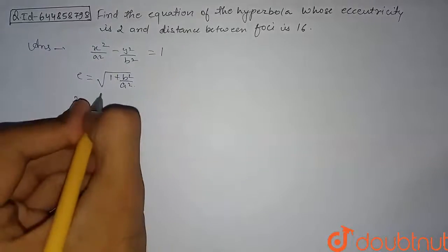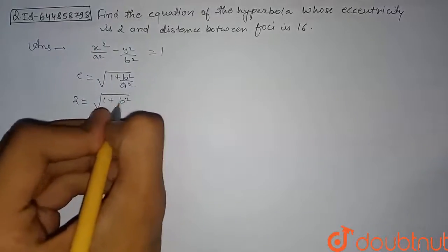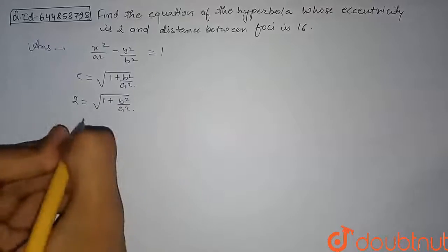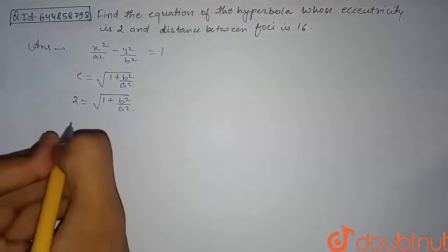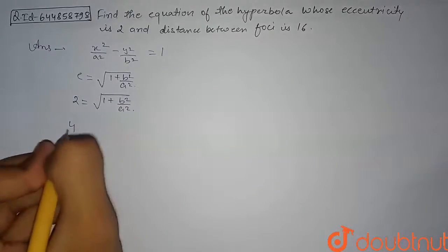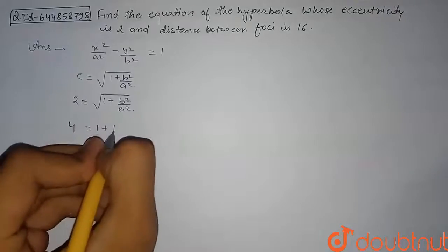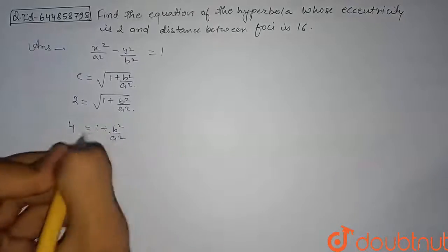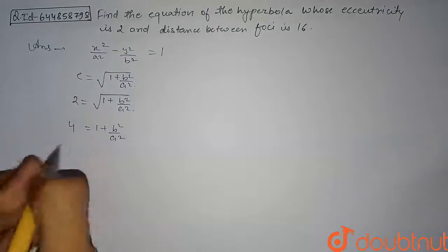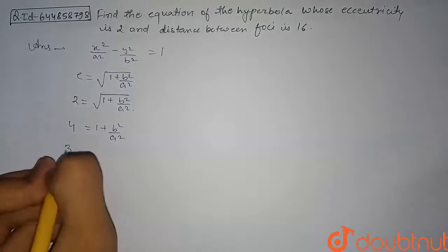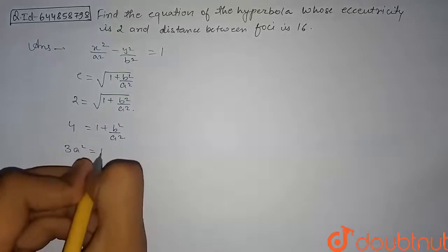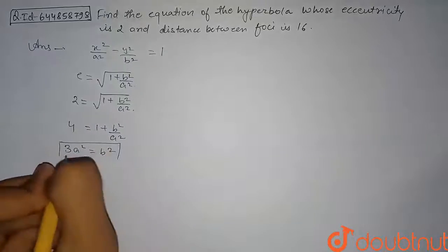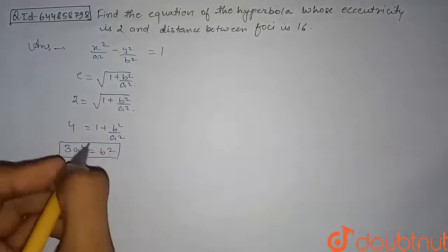We can equate this: 2 = √(1 + b²/a²). Squaring both sides we get 4 = 1 + b²/a². Taking 1 to the other side we get 3a² = b². This is our first relation.